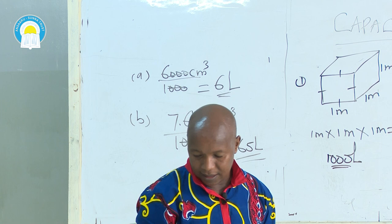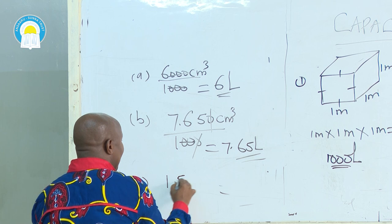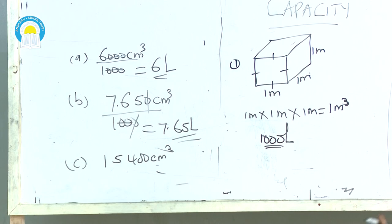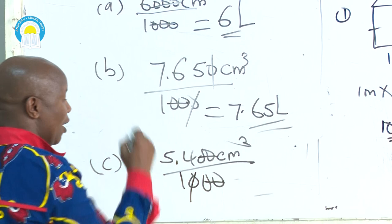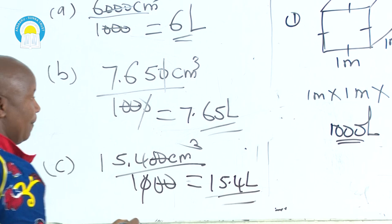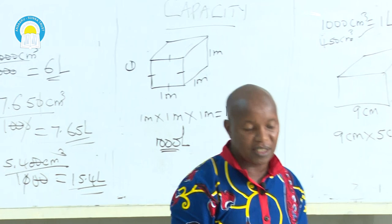Another example: convert 115,400 cubic centimeters into liters. The examiner asks you to give your answer in liters. Divide by 1,000. Our answer is 115.4 liters. That's how you convert cubic centimeters into liters.